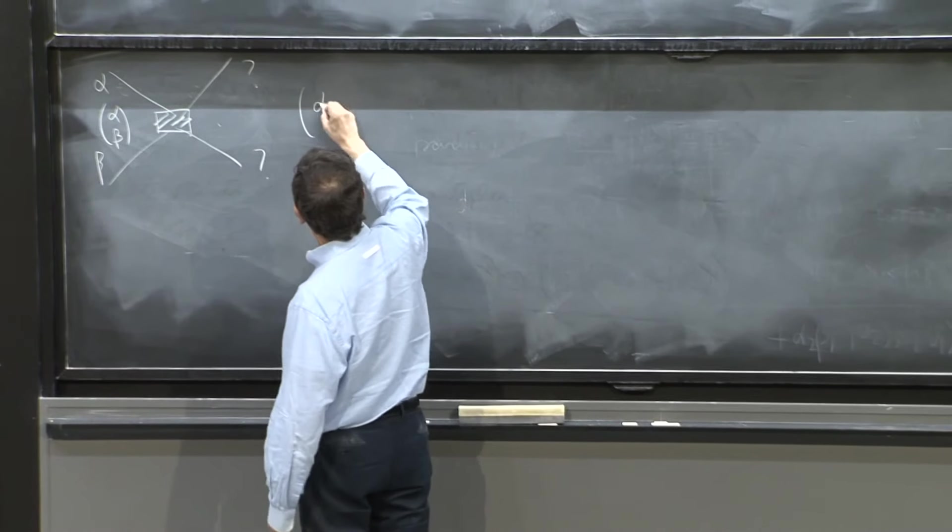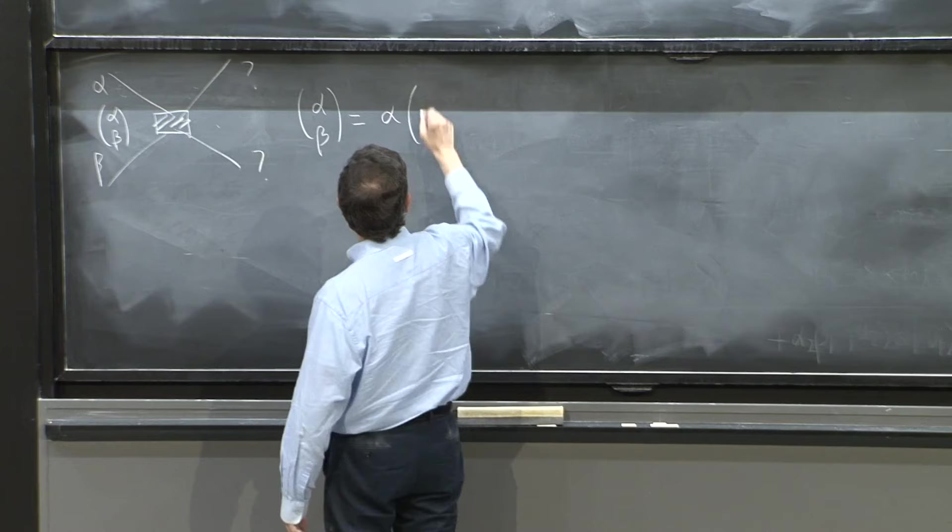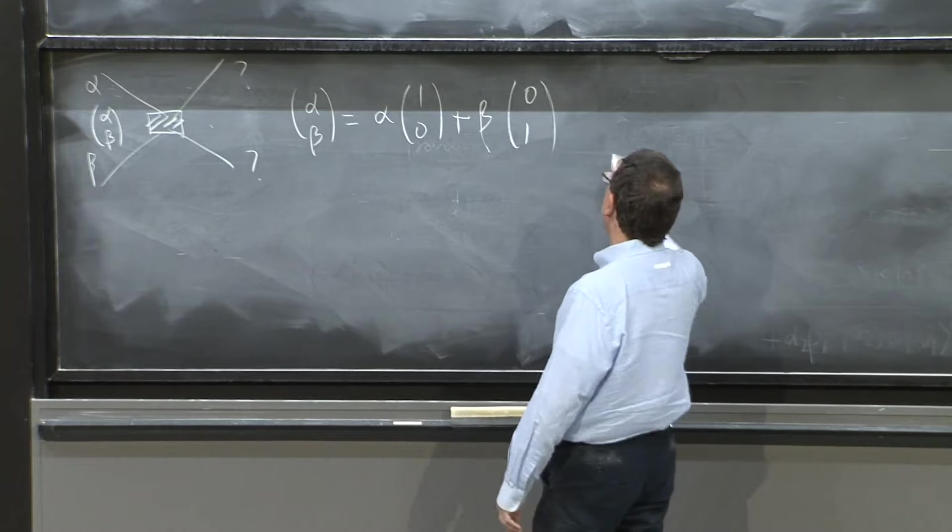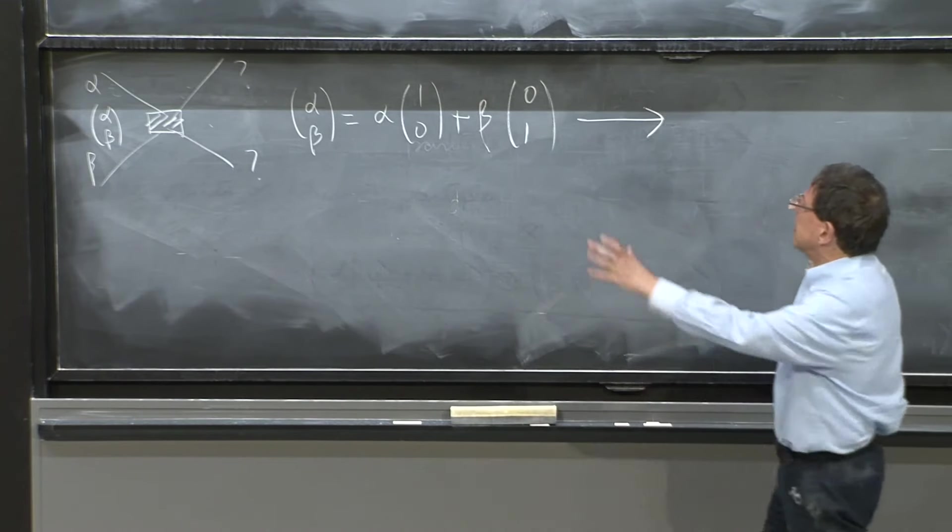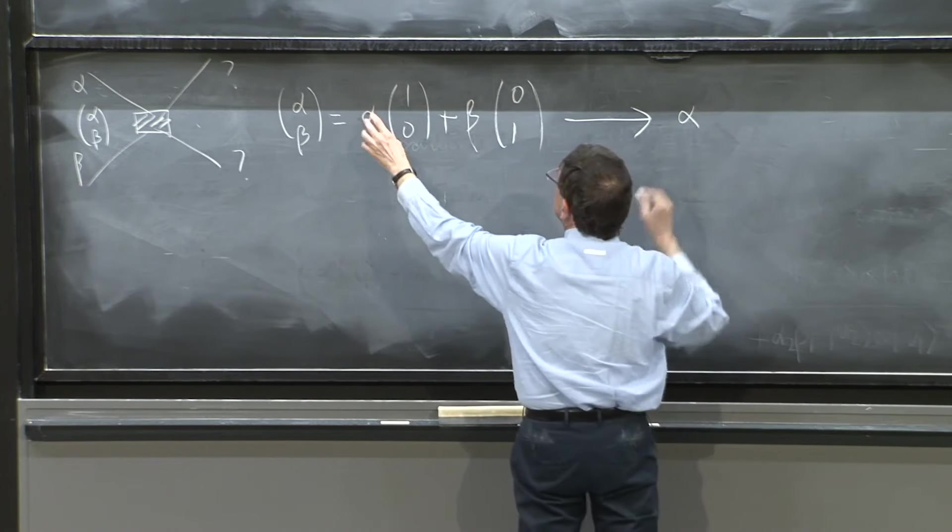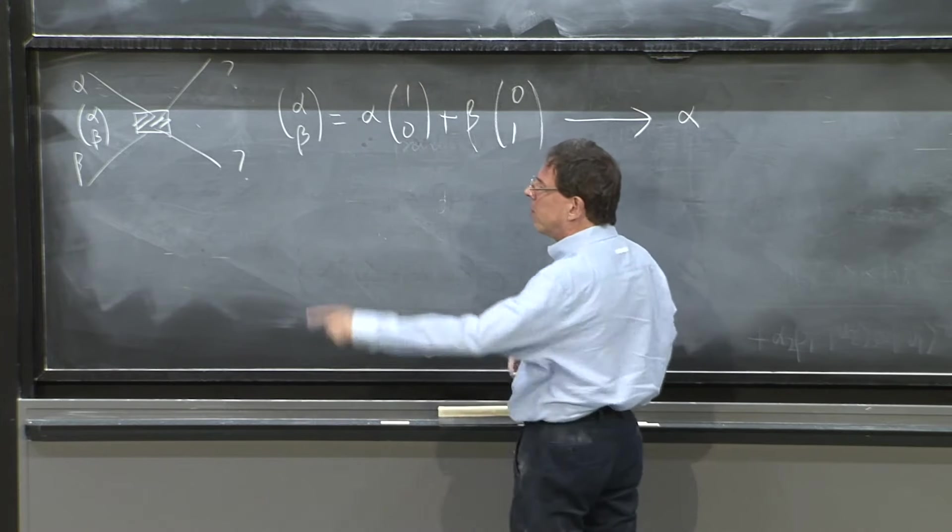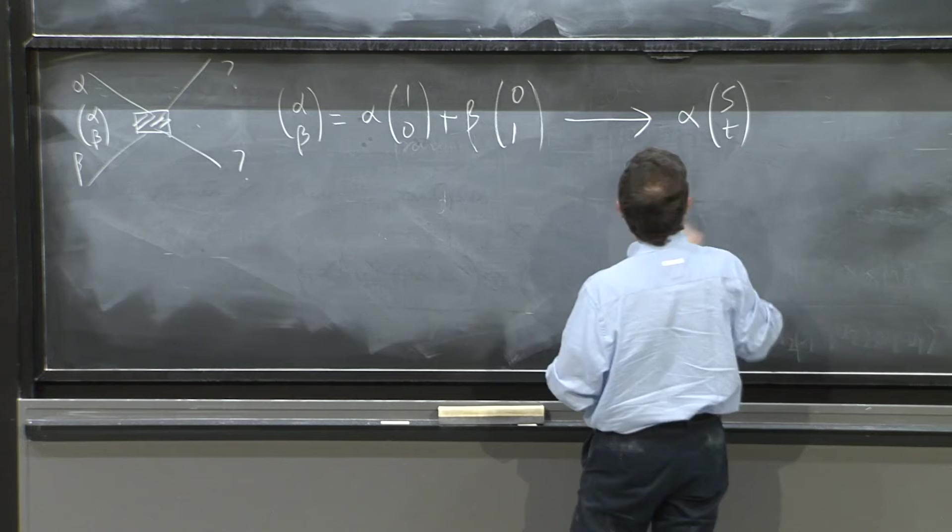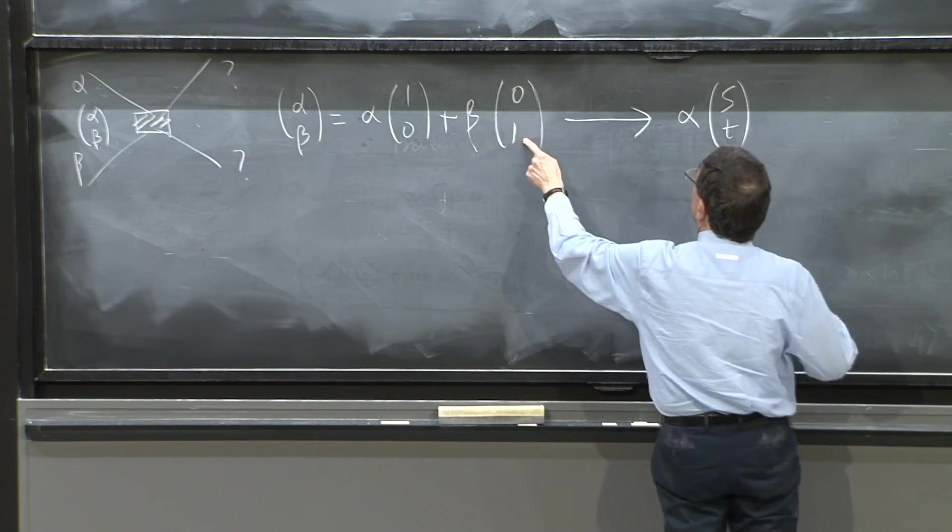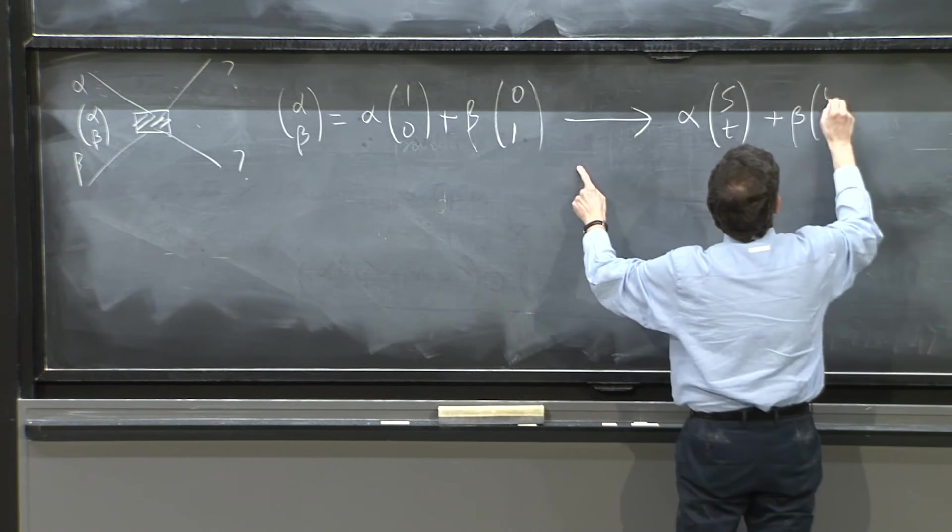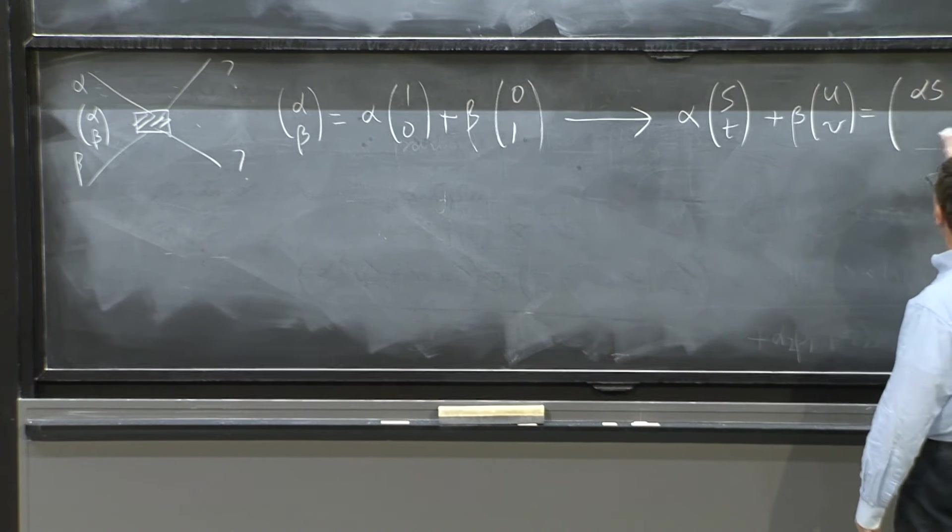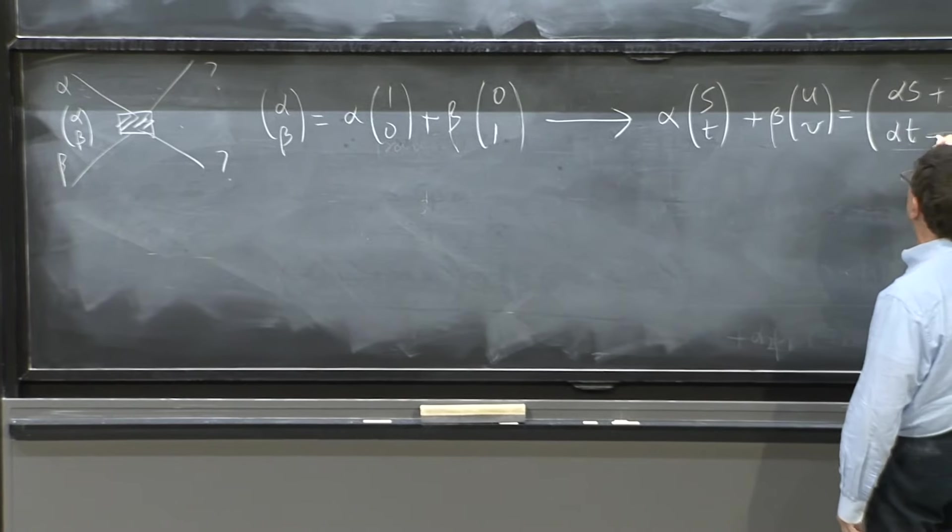Well, the (alpha, beta) state, as you know, is alpha(1,0) + beta(0,1). And now we can use our rules. Well, this state, the beam splitter is a linear device. So it will give you alpha times what it makes out of the (1,0). But out of the (1,0) gives you (S,T). And the beta times (0,1) will give you beta(U,V).